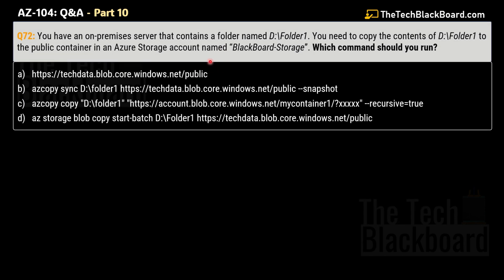Now let's move on to question number 72. Your on-premises server contains a folder D:\Folder1. You need to copy the contents of D:\Folder1 to the public container in an Azure storage account named Blackport Storage. Which command should you run? This question is the next step of the previous one — we understood that Blob and File storage can be used to host on-premises files to cloud storage. Now let's understand how to do that using the AZ Copy command.